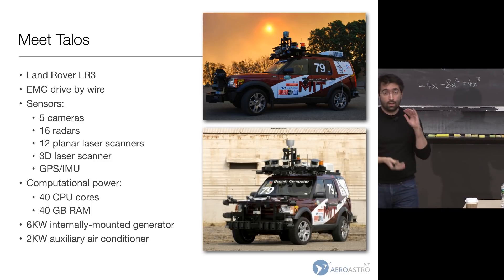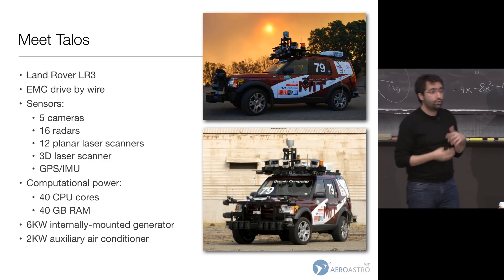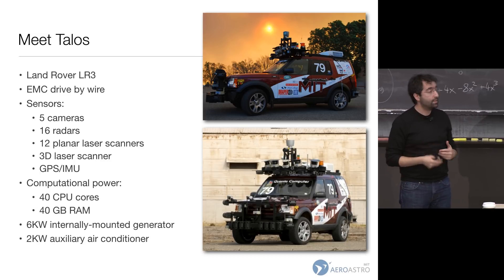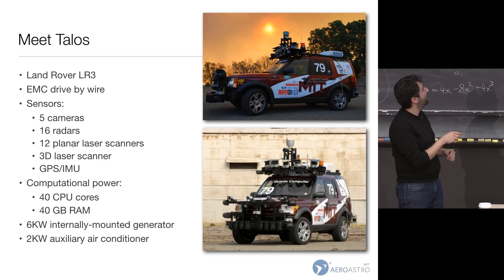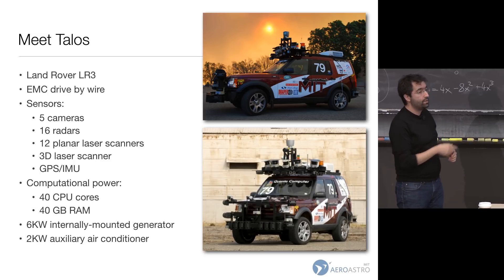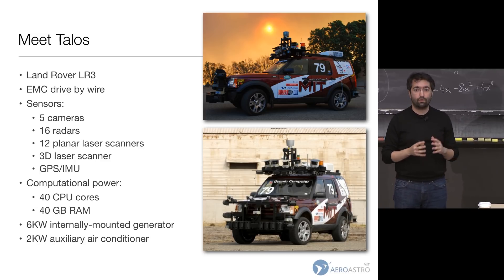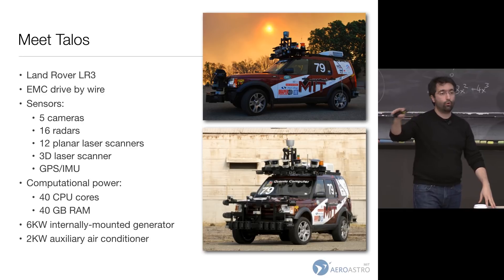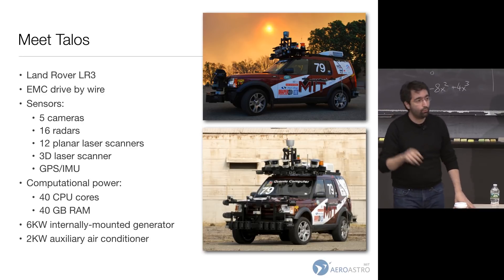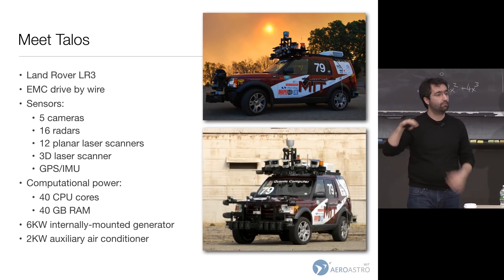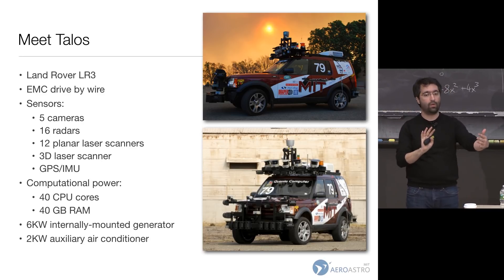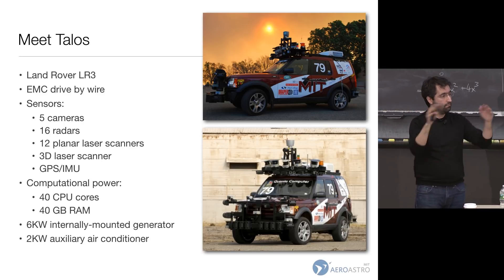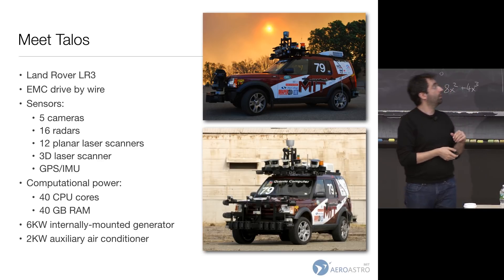This was a lot of sensors, generating a lot of data you had to process. So we had to buy a 40-CPU, 40-gigabyte RAM Quanta computer that normally would run on a Google server-type setup — essentially a server rack with ten computers that we put in the vehicle.